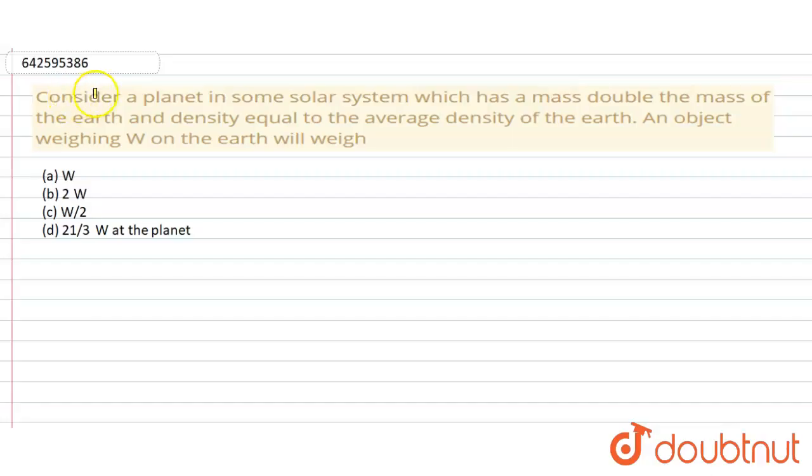Hello everyone. In this question, consider a planet in some solar system which has a mass double the mass of the Earth and density equal to the average density of the Earth. An object weighing W on the Earth will weigh... There are four options here, and we see that the mass is double the mass of the Earth and density is equal.